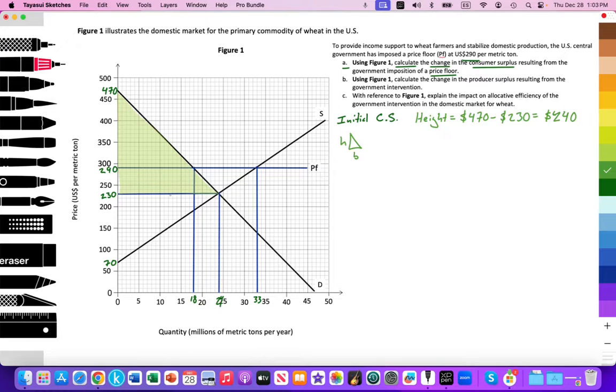Now I have the base. The base, I can see the base is here. It's going up to that free market quantity of 24. So I'll simply do 240 times 24 million. We're going to put M for million. And that's going to equal 5,760 million.